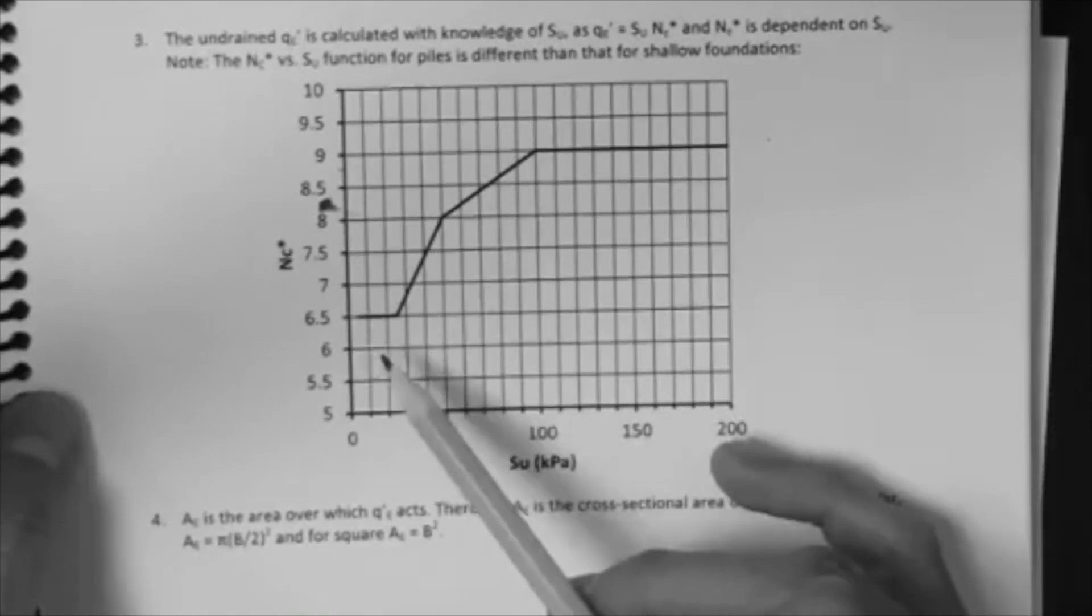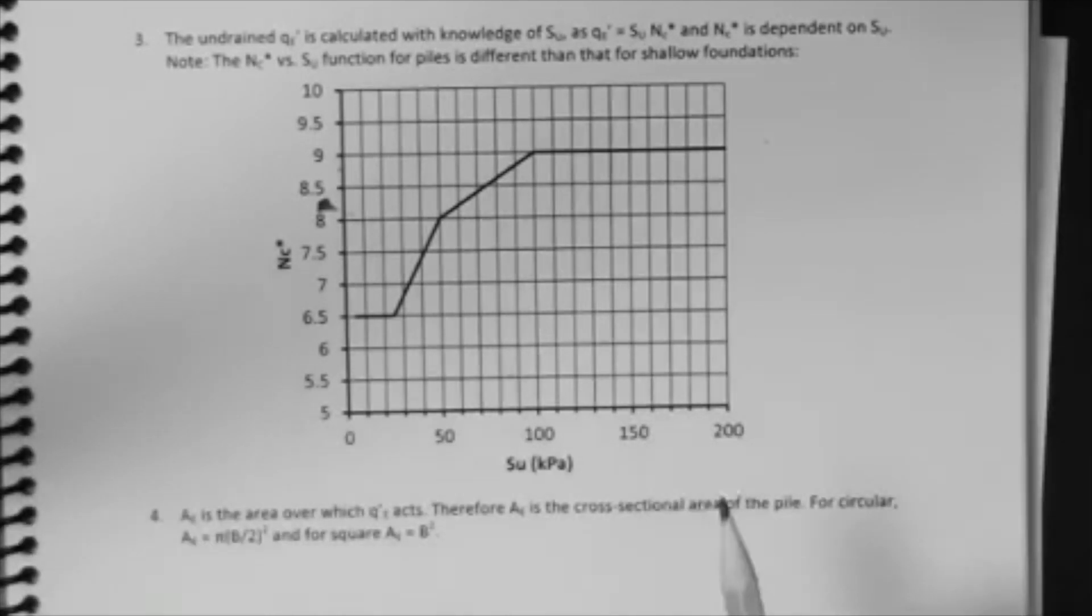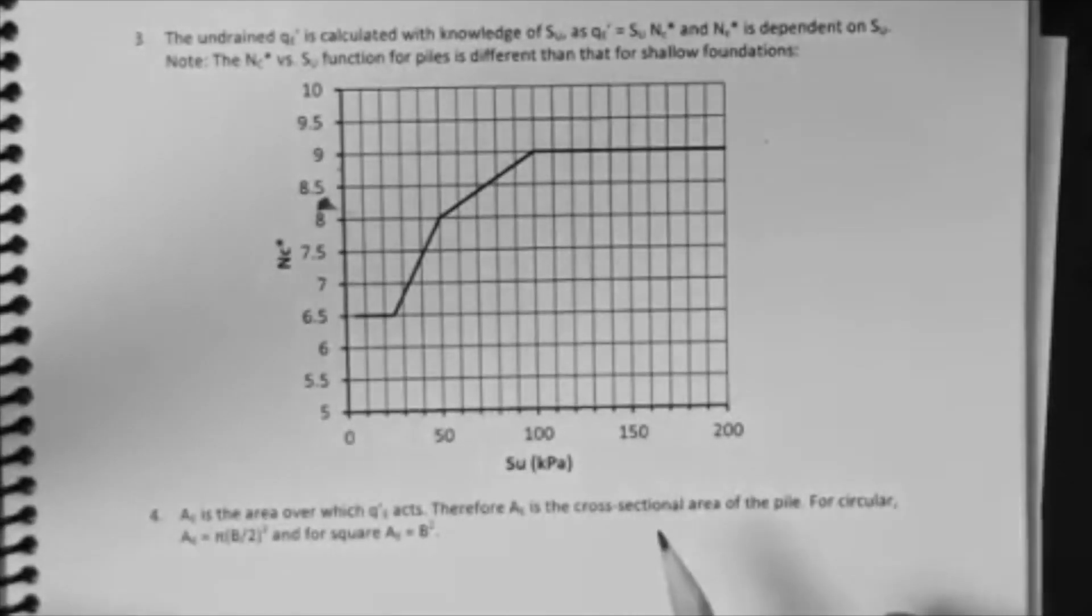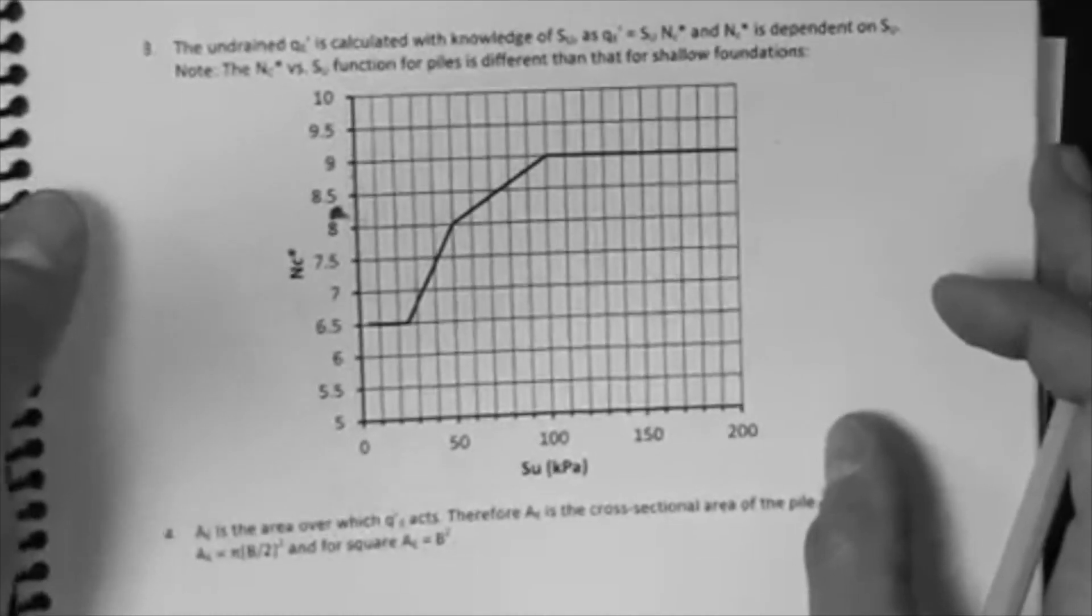Just like the alpha method, this plot or graph comes from experiments that were plotted. And then a trend was fitted, so that we can then use it for our designs.